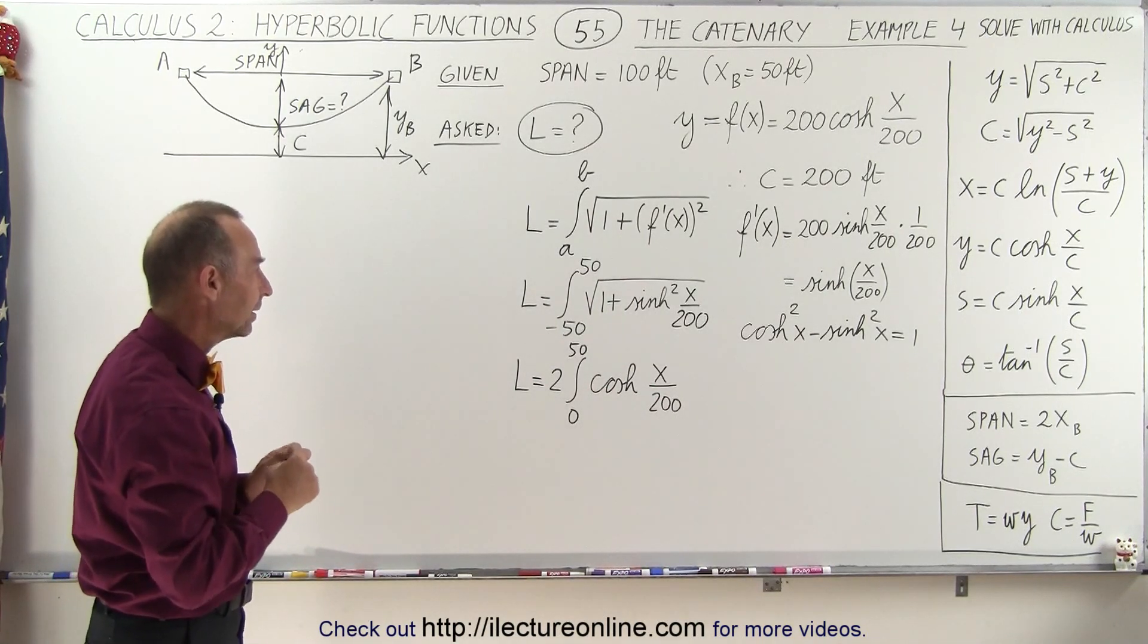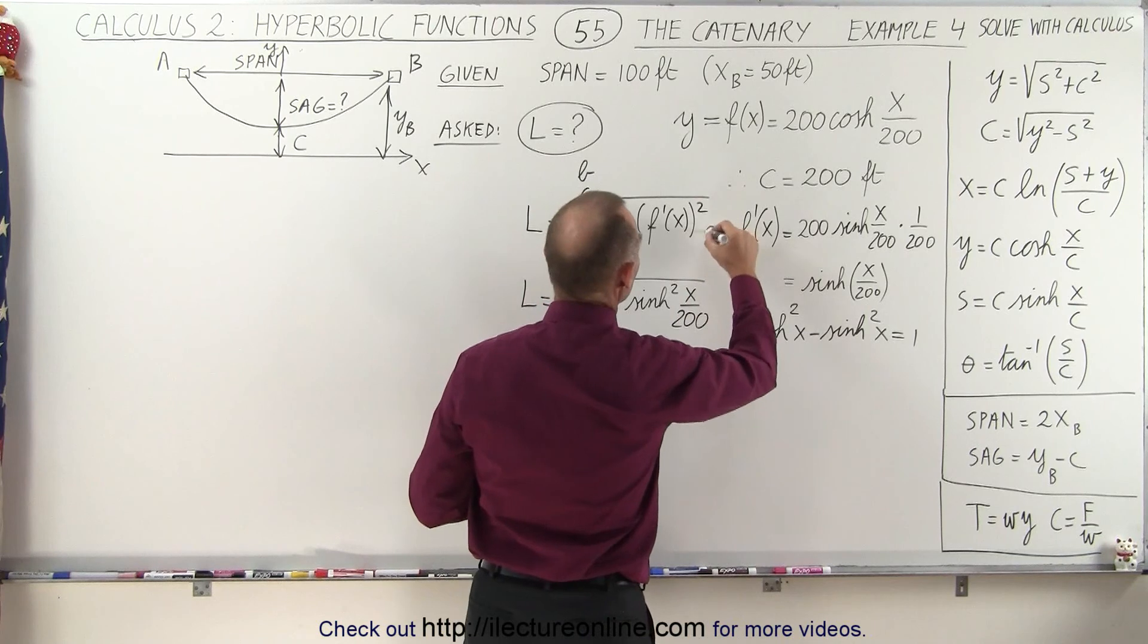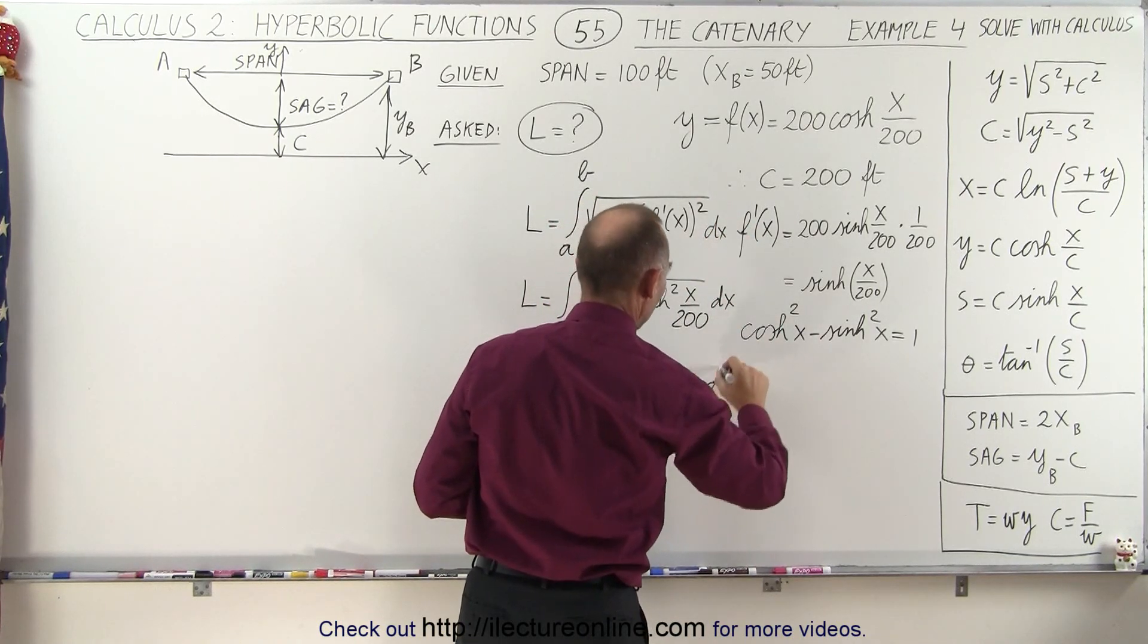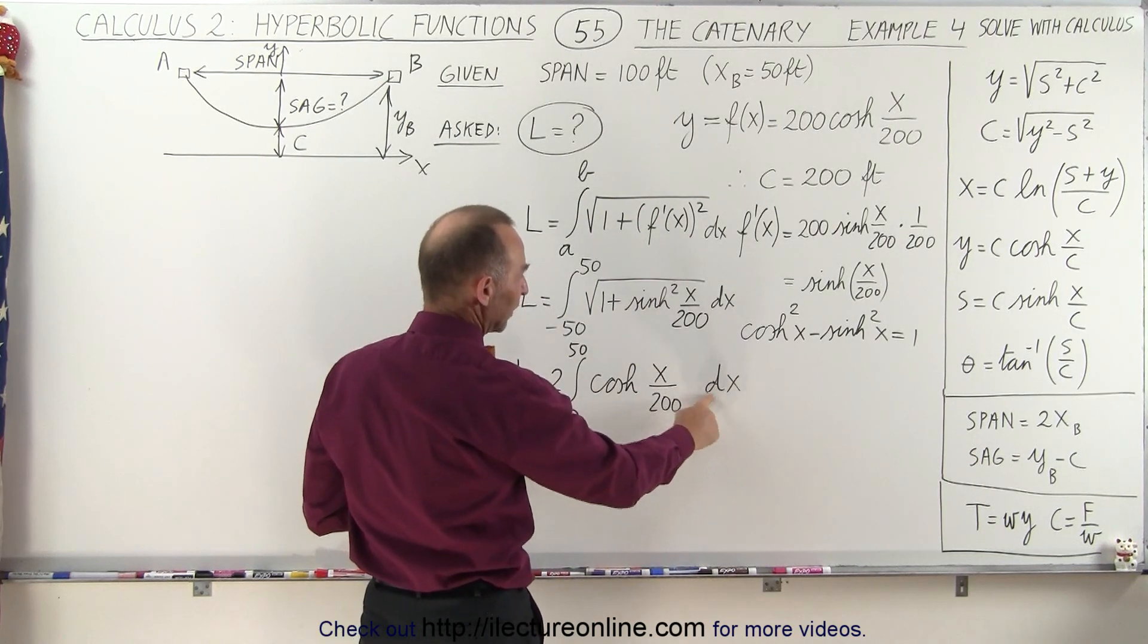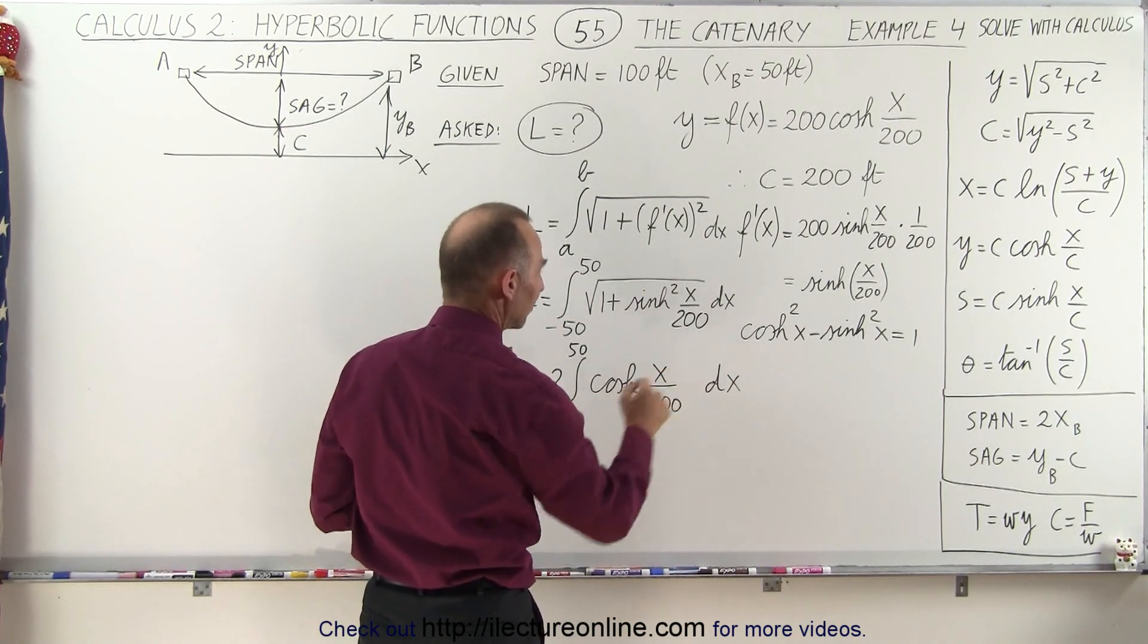All right. So next, we still need a dx. I should put a dx everywhere because we can't integrate without the dx. But notice here, we don't want just the dx. We want the differential of this, which is 1 over 200 times dx.